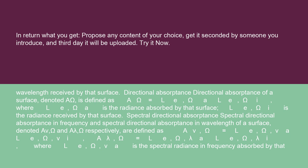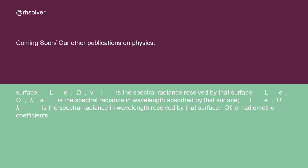Spectral directional absorptance in frequency and spectral directional absorptance in wavelength of a surface, denoted Aν,ω and Aλ,ω respectively, are defined as Aν,ω = LEω,νa / LEω,νi and Aλ,ω = LEω,λa / LEω,λi. Here LEω,ν is the spectral radiance in frequency absorbed by that surface, LEω,νi is the spectral radiance in frequency received by that surface, LEω,λa is the spectral radiance in wavelength absorbed by that surface, and LEω,λi is the spectral radiance in wavelength received by that surface.